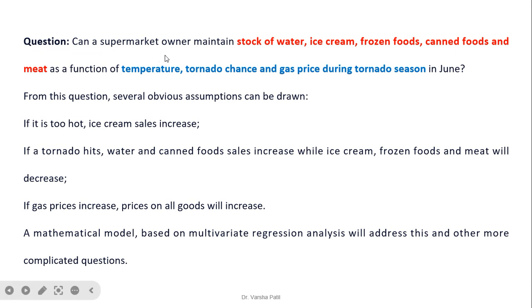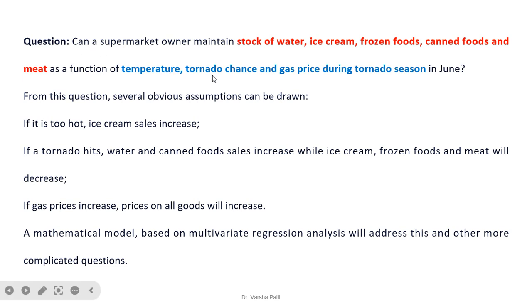Consider this question: Can a supermarket owner maintain a stock of water, ice cream, frozen fruits, canned foods, and meat as a function of temperature, tornado chance, and gas price during the tornado season in June?